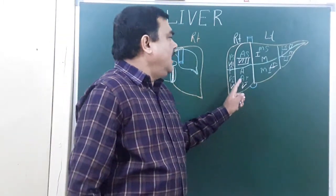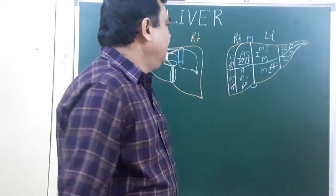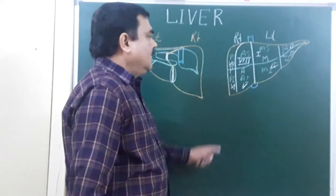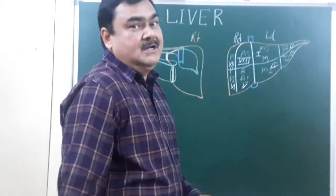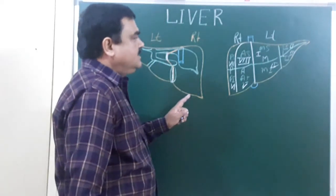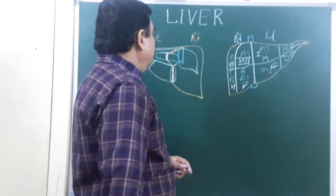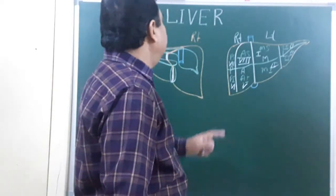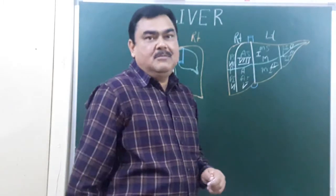About eighty percent of the liver can be removed, and the remaining twenty percent survives and regenerates within five to six months. This concludes the segmentation and physiological division of the liver. Thank you.